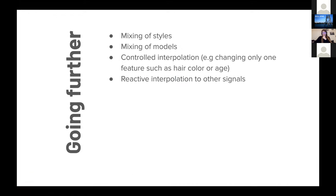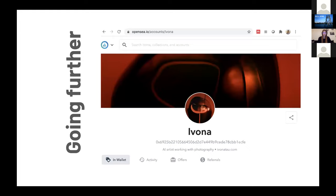Going forward, what would be interesting is controlled interpolation — you can change only one feature and move in one dimension, such as changing only hair color or age when generating humans. I already did this a little when generating faces showing emotions. And also what would be cool is mixing up different style models. Now as the NFT craze is starting, I will probably mint some of my work on OpenSea — so if you're interested, check it out.